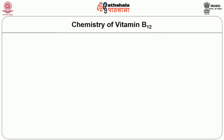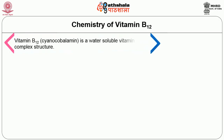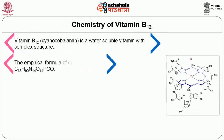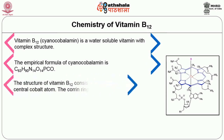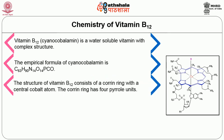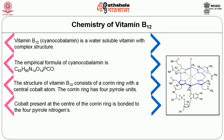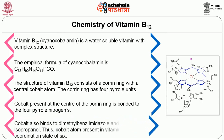Coming to the structure and chemistry of vitamin B12, that is cyanocobalamin: it is a water-soluble vitamin with a complex structure. The empirical formula of cyanocobalamin is C63H90N14O14PCo. The structure of vitamin B12 consists of a corrin ring with a central cobalt atom. The corrin ring has four pyrrole units. Cobalt at the center of the corrin ring is bonded to the four pyrrole nitrogens and also binds to dimethylbenzimidazole and aminoisopropanol. Thus the cobalt atom in vitamin B12 is in a coordination state of 6.